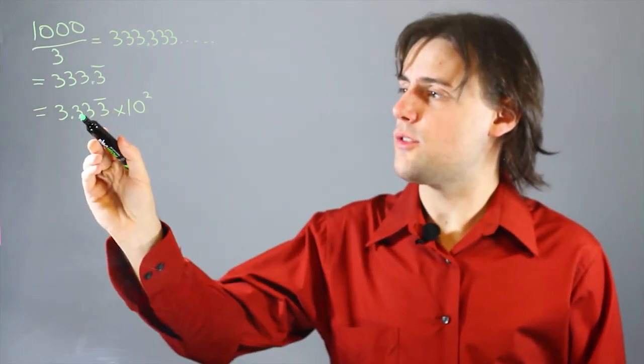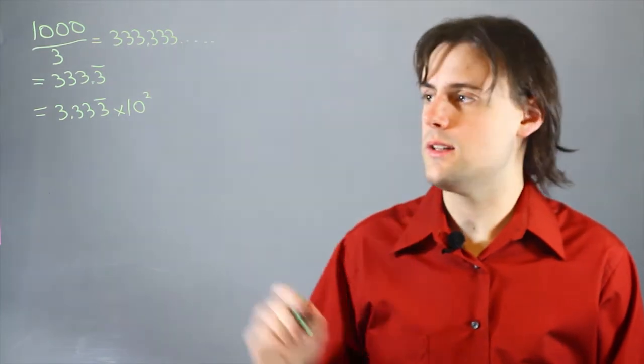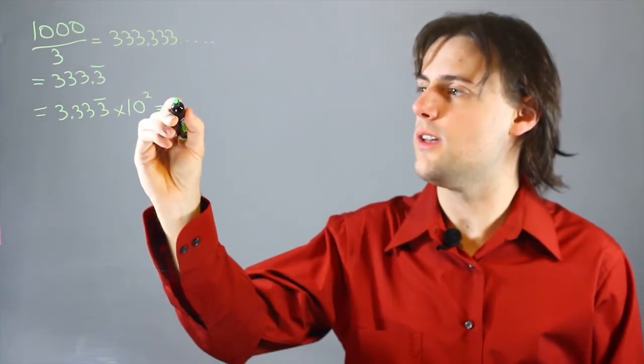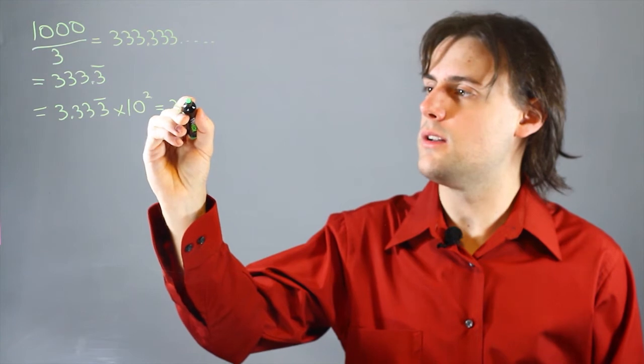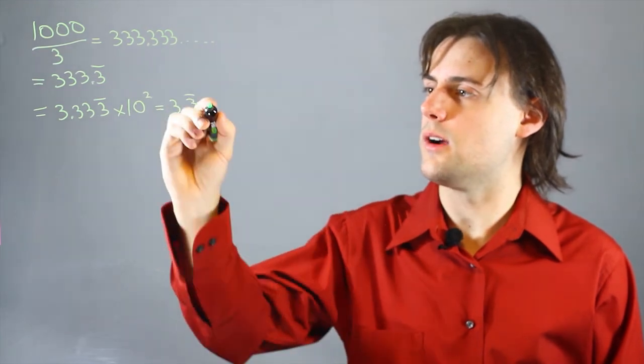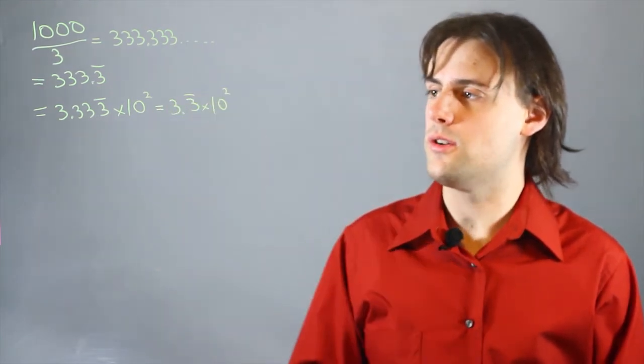Because these 3s are now to the right of the decimal place, we can just simply rewrite this as 3.3 with a repetend bar, times 10 to the power 2.